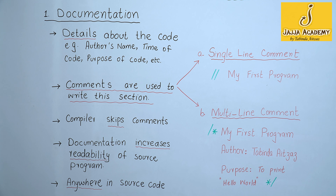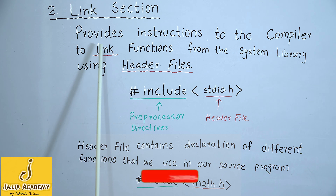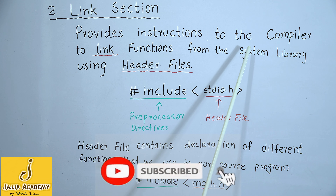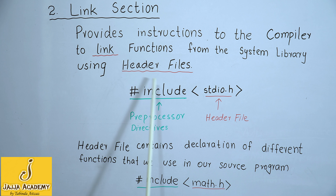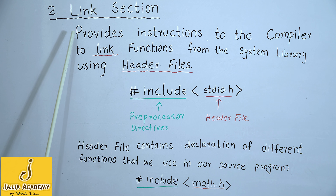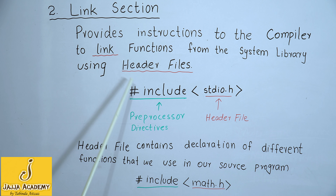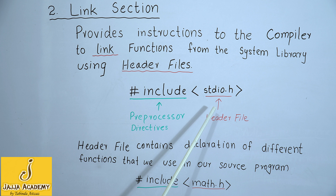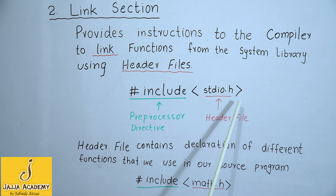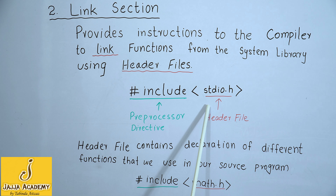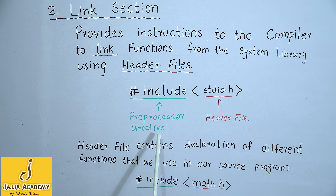Let's move to the next section: link section. The link section provides instructions to the compiler to link functions from the system library by using header files. The link section is the topmost section of a program where we write these instructions. This green part is a preprocessor directive, and inside the angle brackets I have written a header file.